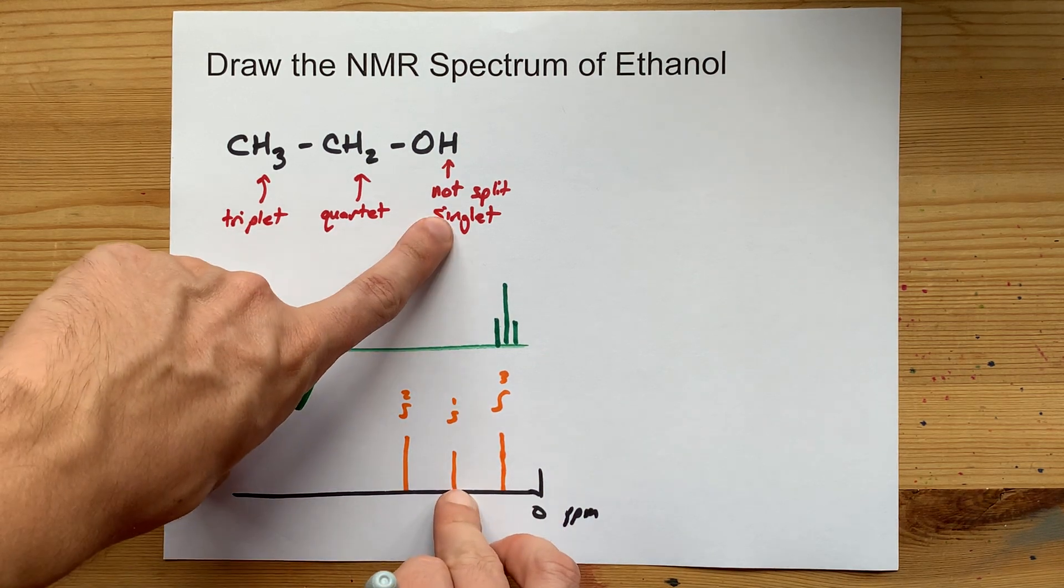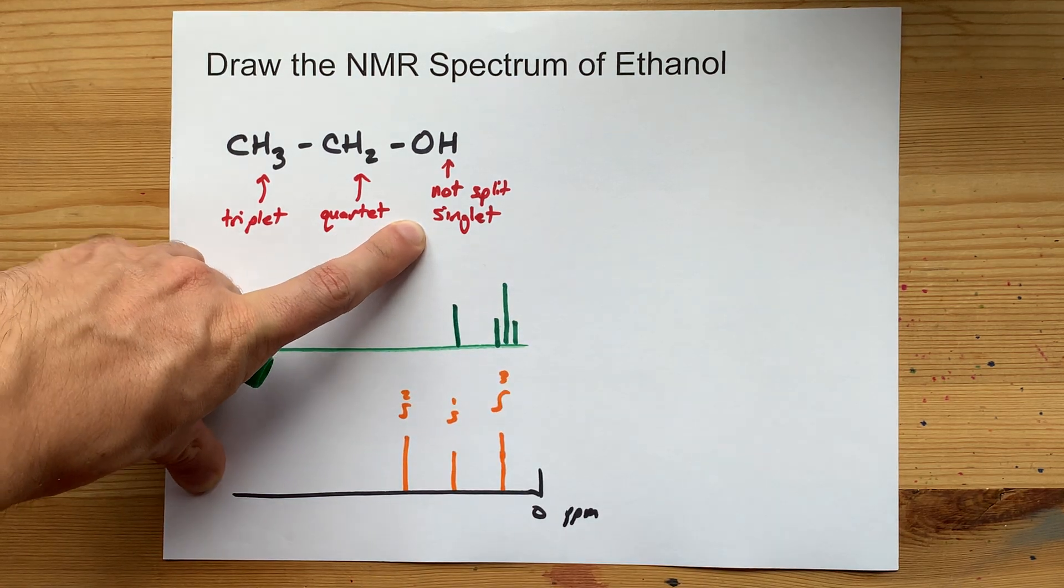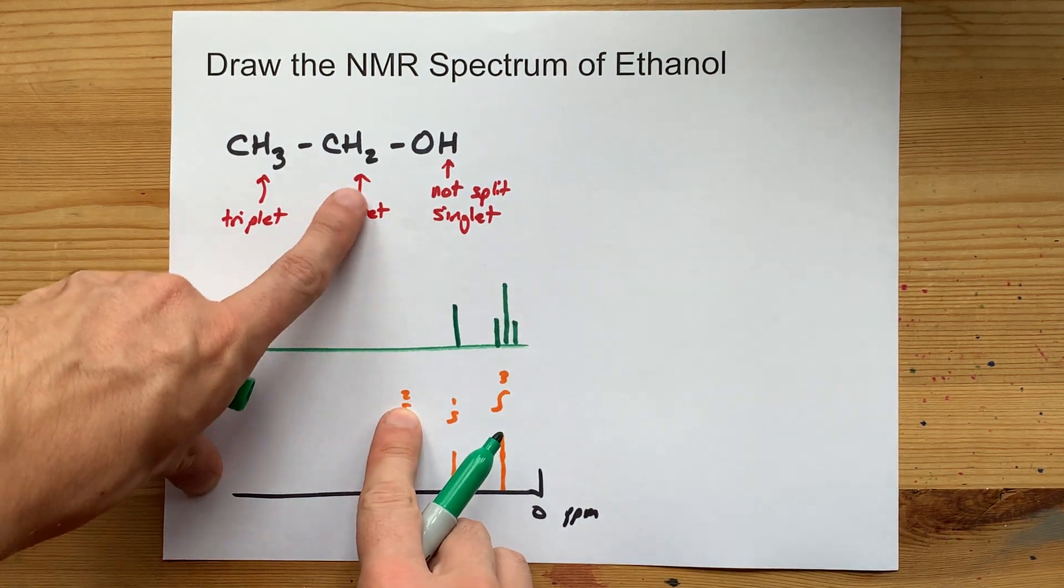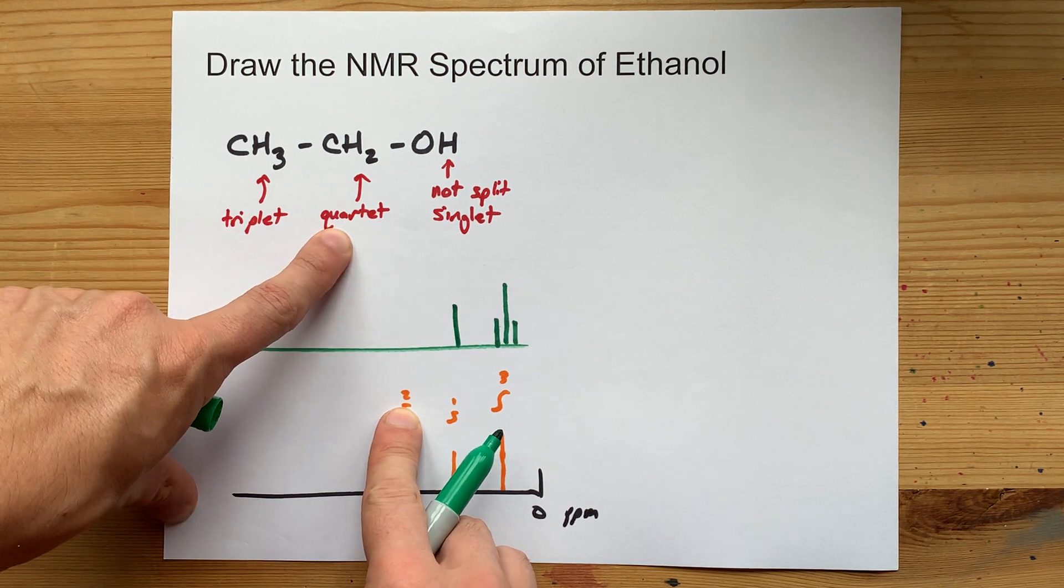This integrated area of 1 is not split. It will remain as a singlet. And then the integrated area of 2, because there's two hydrogens here, is spread into a quartet.